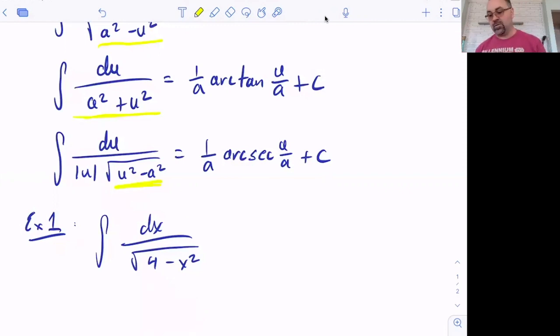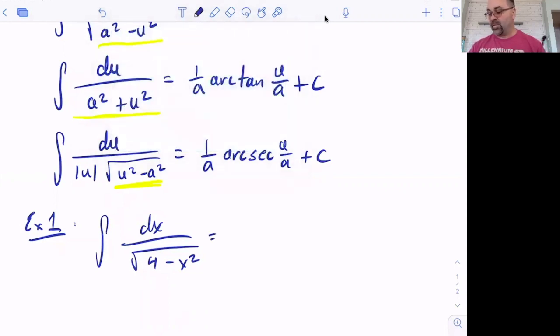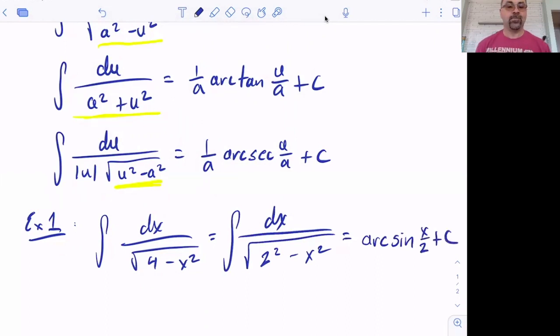So when you look at example one here, what do you see? Well, you see a constant minus a function squared. So does that fit our pattern? Well, sure. Because four is two squared minus x squared. So this is simply arc sine of x over two plus our constant of integration. And there we go.